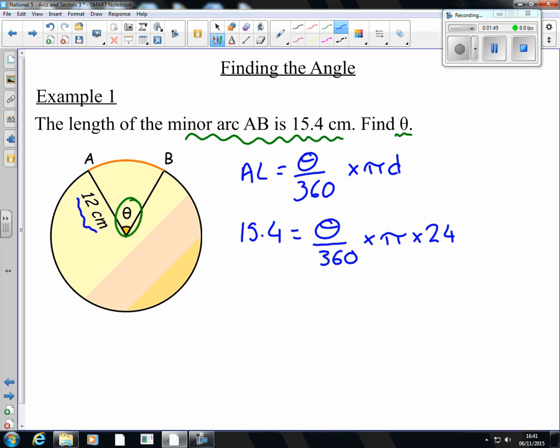And very similar processes to what we did in volume. I want to find out where that theta is. I need to get rid of everything else on that line apart from theta. So firstly, I need to cancel out a big row of timeses. So to cancel out a big row of timeses, I divide. So it's going to be 15.4 divided by pi times 24. And after we've got rid of them on the right hand side, we're just going to be left with theta over 360.